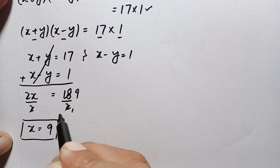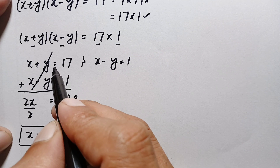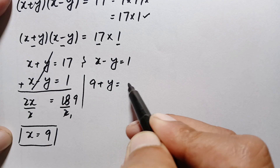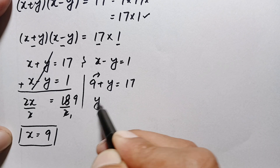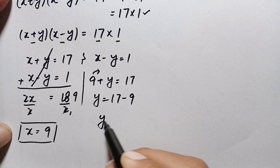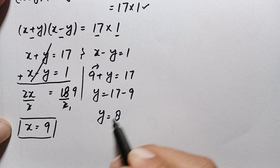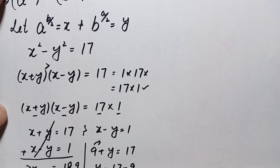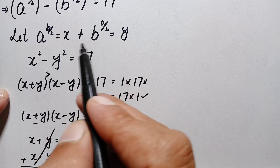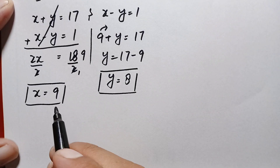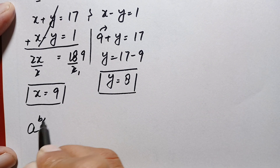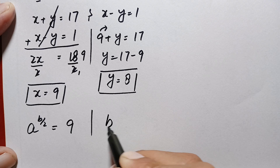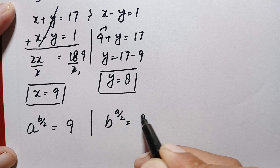Now we find y. Substituting x = 9 into the first equation: 9 plus y equals 17, so y equals 17 minus 9, which is 8. Our target is to find a and b, not just x and y, so we return to our substitution: x equals a^(b/2) = 9, and y equals b^(a/2) = 8.